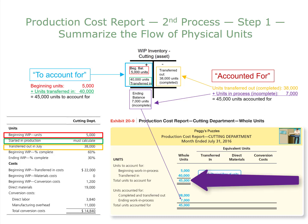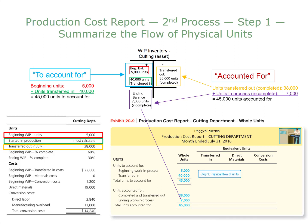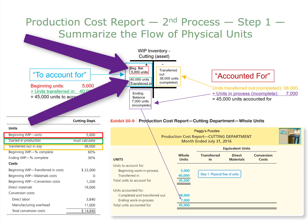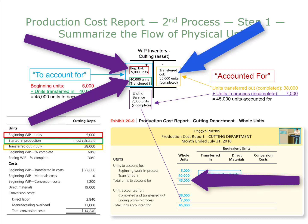Remember, units to account for and units accounted for have to be the same number. To summarize step one of the production cost report: we take the beginning work in process units and add that to the number of units started, giving us 45,000 total units to account for. 38,000 were transferred out to the cutting department, and 7,000 puzzles are still in the cutting department, partially completed as of the end of July.